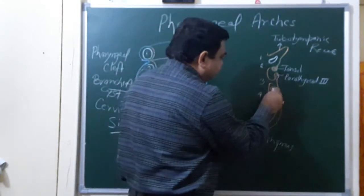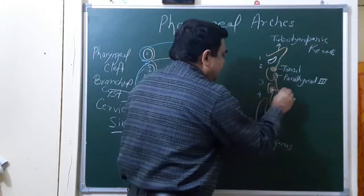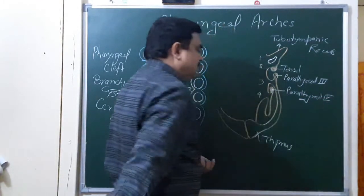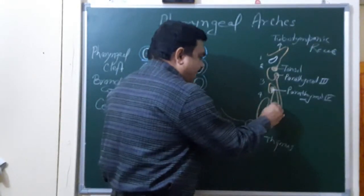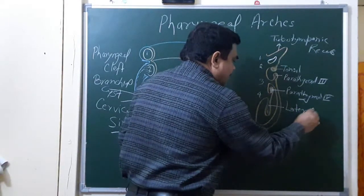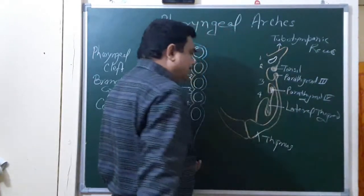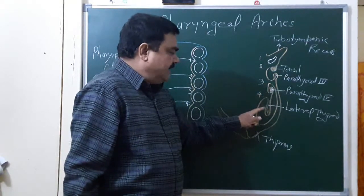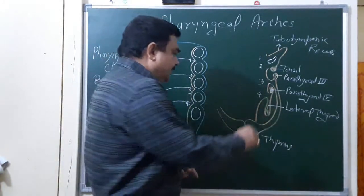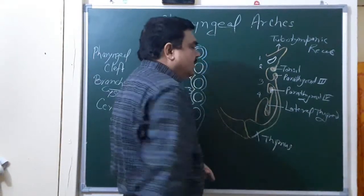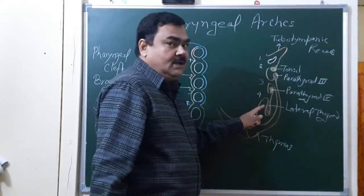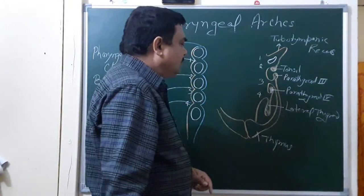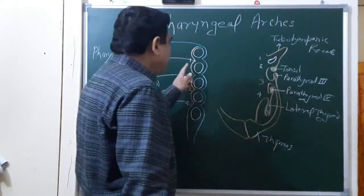The dorsal part of the fourth pouch forms parathyroid fourth, while the ventral part forms the lateral thymus. This lateral thymus joins with the thymus gland and also forms the ultimobranchial body, in which parafollicular cells, or C-cells, are present. These are the structures derived from the pharyngeal pouches.